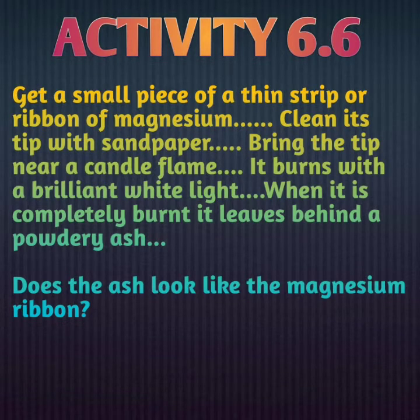Today we will see a few activities based on chemical changes. First one: get a small piece of thin strip or ribbon of magnesium. Clean its tip with sandpaper. Bring the tip near the candle flame — it burns with a brilliant white light. When it is completely burned, it leaves behind a powdery ash.